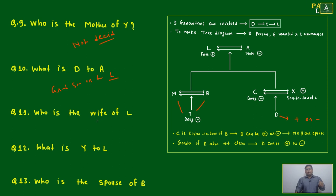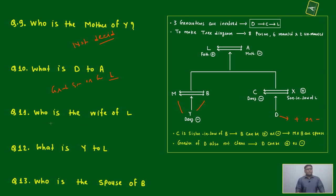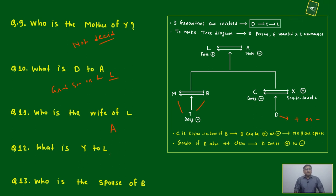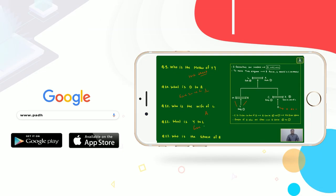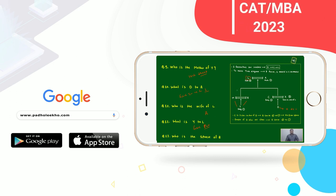D may be the grandson or granddaughter of A. Who is the wife of L? No confusion — it is A. What is Y's relation to L? That is very clear — L is the grandfather of Y, as it is given that L is the grandfather. Who is the spouse of B? M — M and B are spouses to each other.